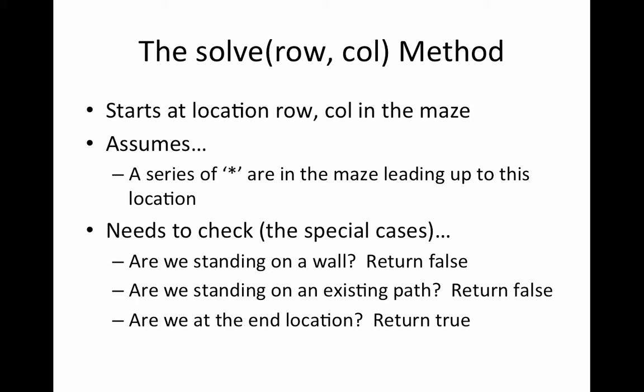So at least one of its neighbors will have a star. Before we talk about the base case and the recursive case, we will first check the special cases, which are: are we standing on a wall? Are we on an existing path that we should not investigate? Are we at the end location, which is the only happy event, the only event in which we should return true? In the previous two cases, we are just returning false.